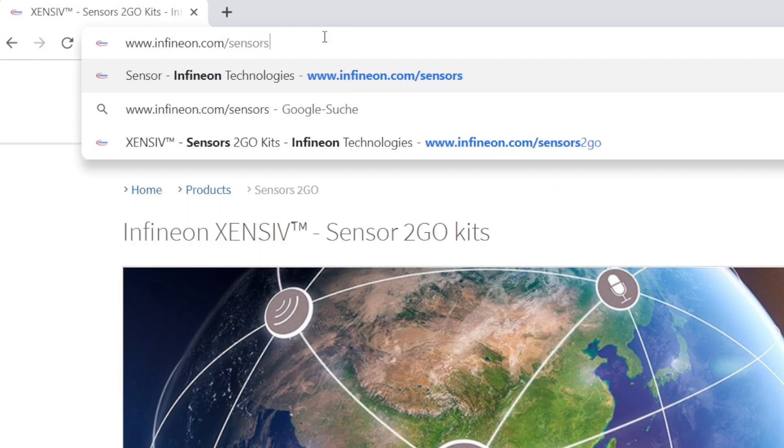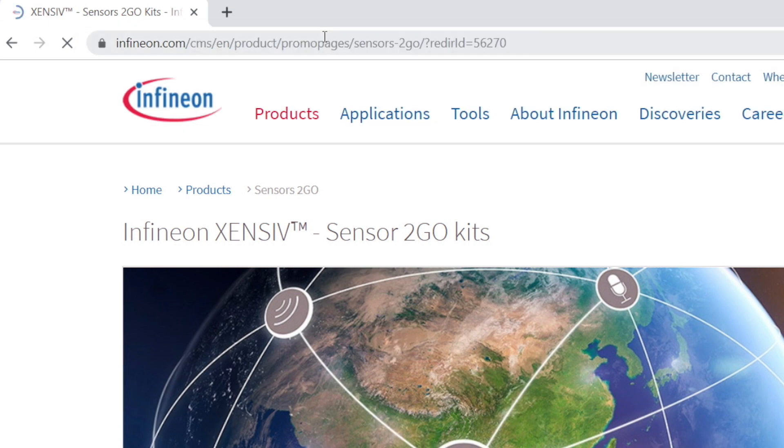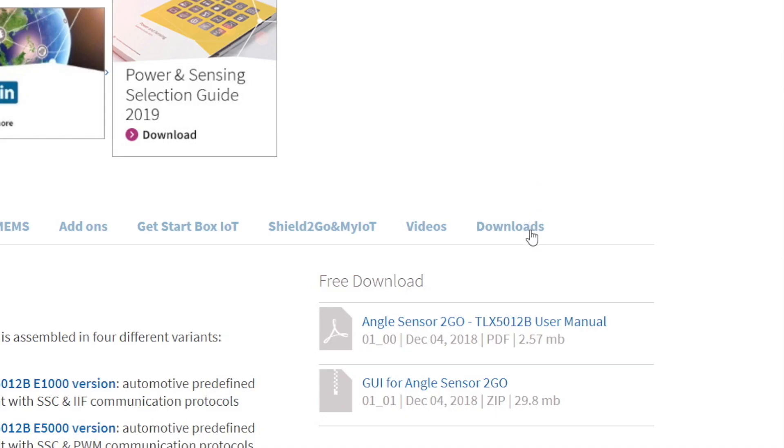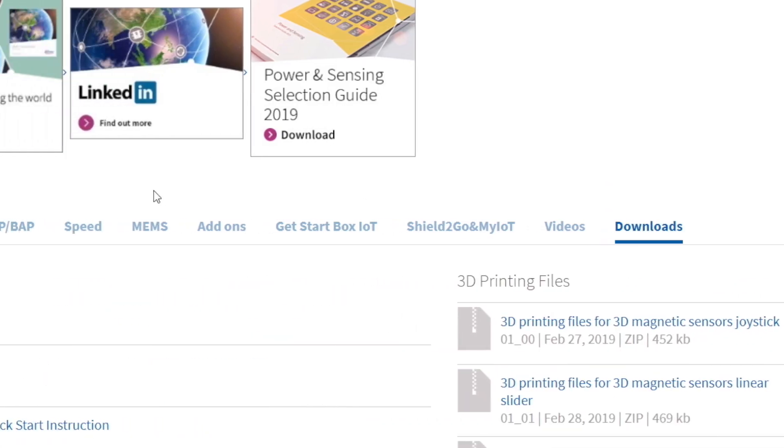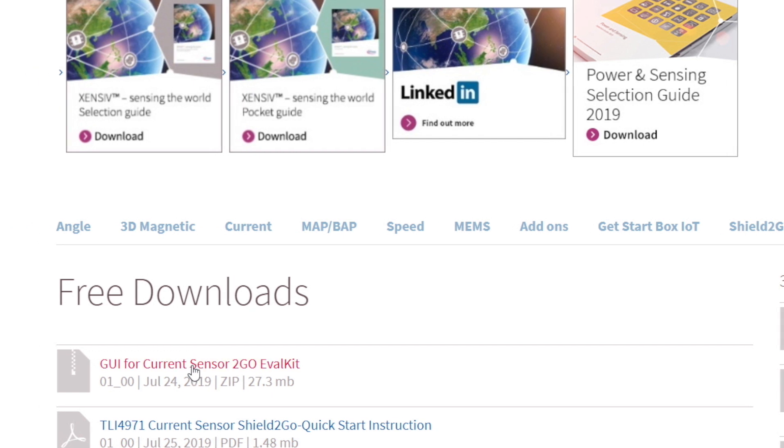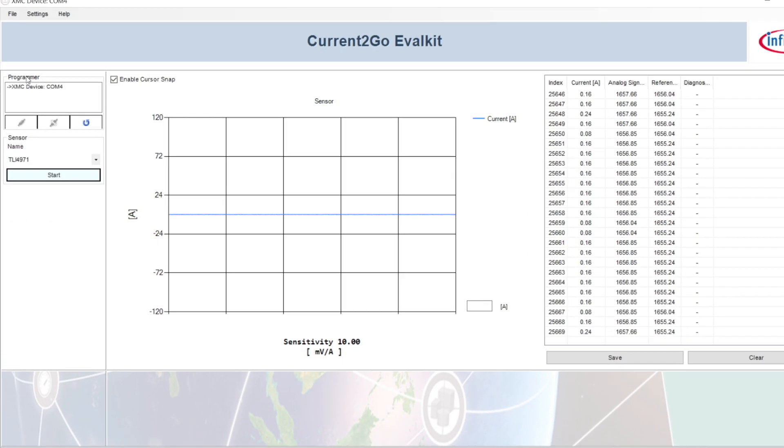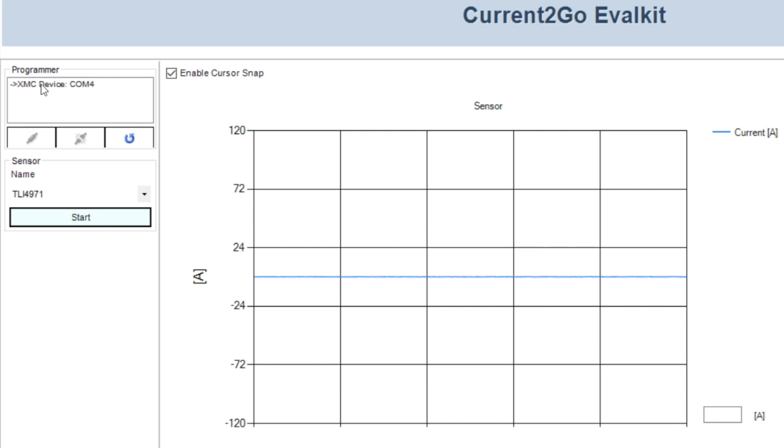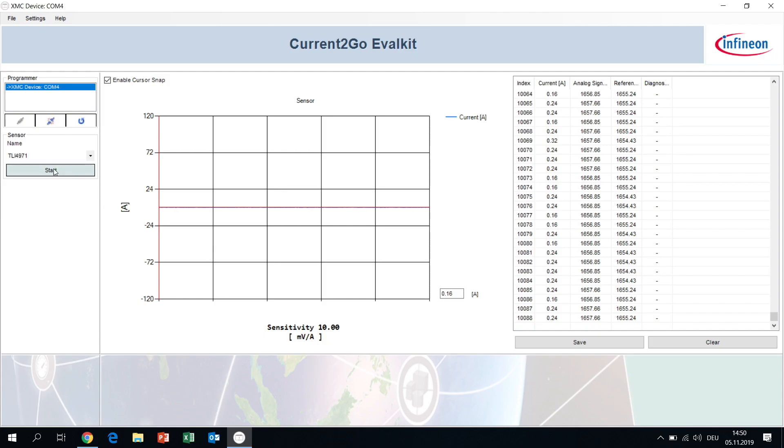First of all you need to download the software. You can find it on Infineon.com/sensors2go in the download section. After the installation you need to connect to the sensor and then select the TLI 4971 and press start.